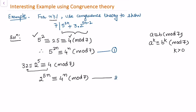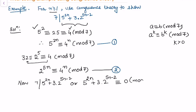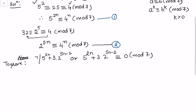Now we want to prove that 7 divides 5 to the power 2n plus 3 times 2 to the power 5n minus 2. In terms of congruences, this is equivalent to saying 5 to the power 2n plus 3 times 2 to the power 5n minus 2 is congruent to 0 modulo 7. That is what we want to prove.